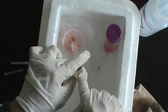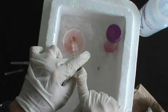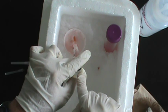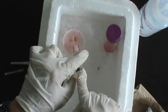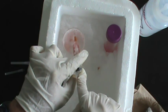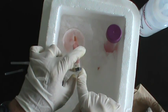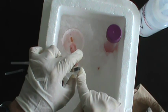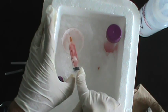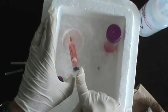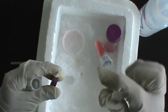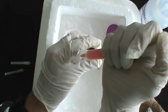Now the last time that you draw this solution up into the 26 gauge needle, you do not want to expel it back into the small petri dish. This is the last time we're going to put this material through the needle, so at this time we want to transfer our suspension of spleen cells into the 15 milliliter centrifuge tube.